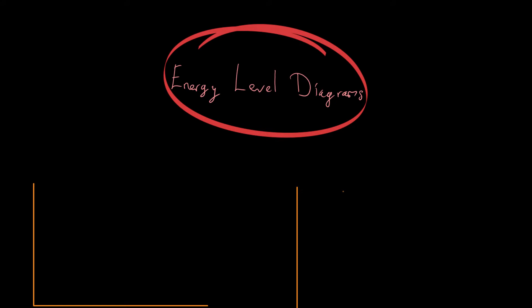In this video we're going to have a look at energy level diagrams. With energy level diagrams we can see the type of reaction that occurs - whether it's an exothermic or an endothermic reaction - and we can see the amount of energy that is either taken in from the surroundings or given off to the surroundings. Let's have a look straight away at what an energy level diagram looks like.